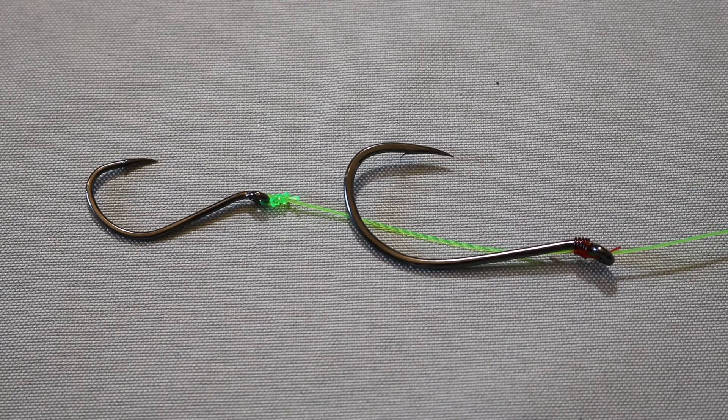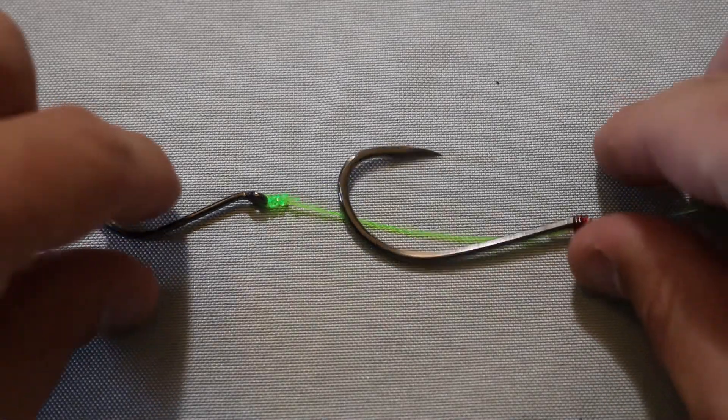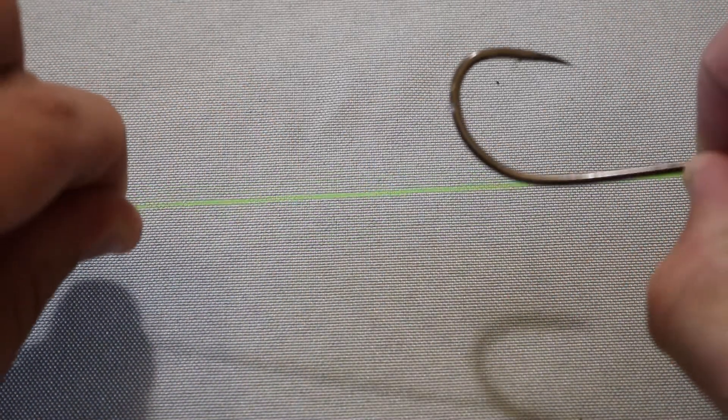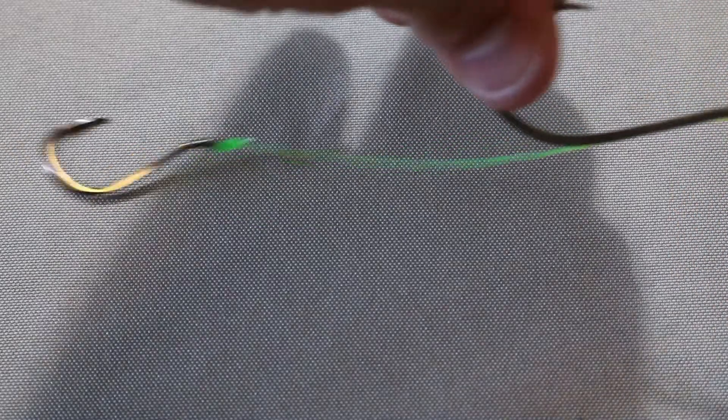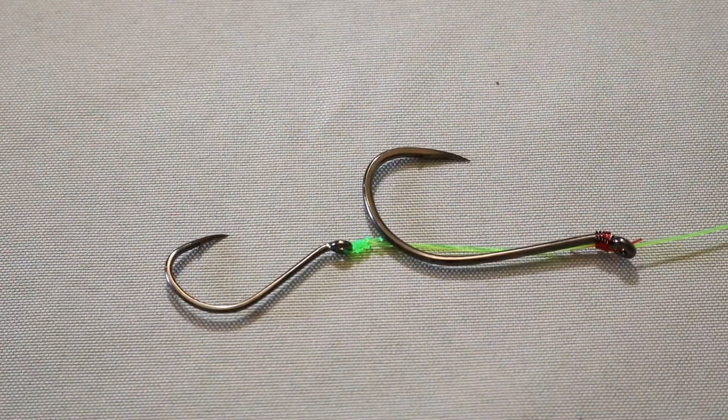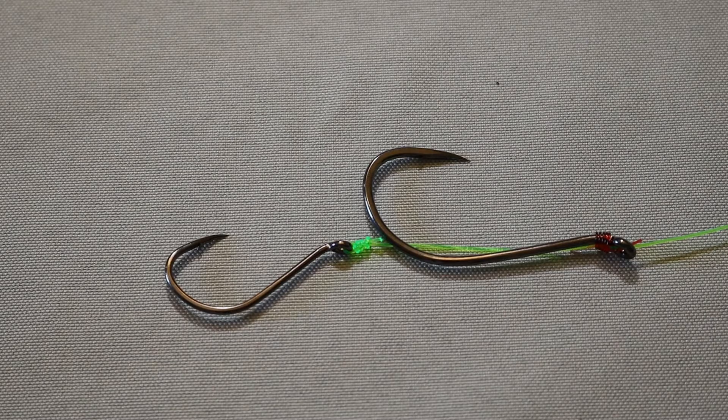I love using this knot whether I'm going out for lingcod and I want to tie on a blue or a big greenling, or if I'm halibut fishing and I'm going to be using different sized baits, whether that be a smelt or some sardines or anchovies. Depending on what I'm using, I'm going to need different size or adjustable length on my hooks. So instead of tying a bunch of different leaders, I'm just going to tie one like this that I can adjust and make it longer or shorter depending on what I got going on. Let's learn how to tie that right now.